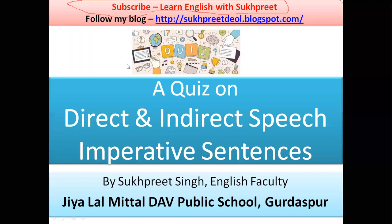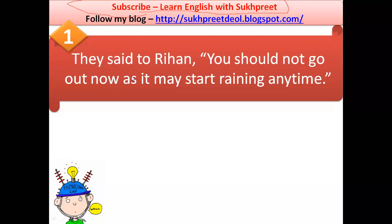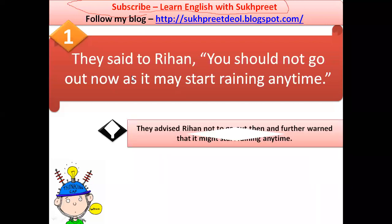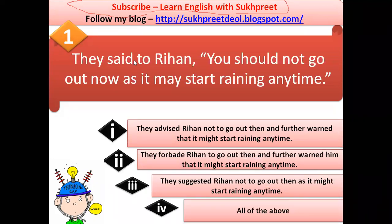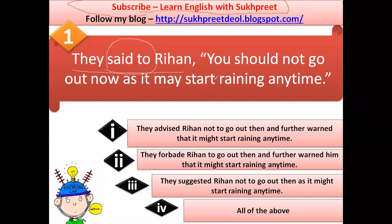Let's get started. The first question is: 'They said to Rehan, you should not go out now as it may start raining any time.' First, notice the tense of the reported portion — 'they said to Rehan' is the reporting clause, and the underlined part is the reported speech. Second, notice what kind of sentence it is.